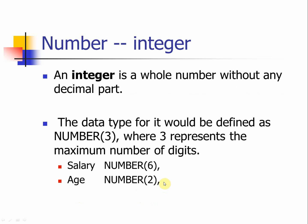The NUMBER data type has several variations. An integer is a whole number without any decimal part, so if you want to define integer numbers, you simply put NUMBER with a parenthesis indicating how many digits you need. For example, SALARY NUMBER(6) can hold six digits, so the domain goes up to 999999. If someone is making seven digits, that is outside the domain and the database will reject that input. You would need to go back and change the digit count, or you cannot include that person in the database.